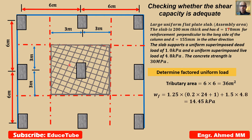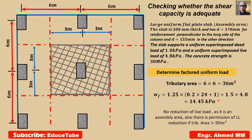Here, we use the slab thickness as well, uniform superimposed dead load and uniform superimposed live load. We got 14.45 kPa. One important point: no reductions of live load, as it is an assembly area. According to NBCC, there is permission of live load reductions if tributary area is greater than 80 meter square.